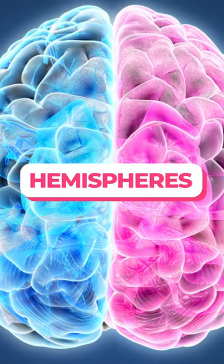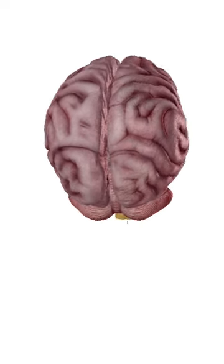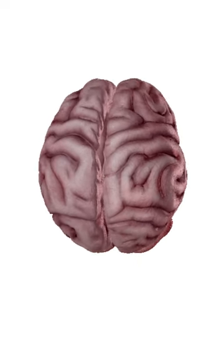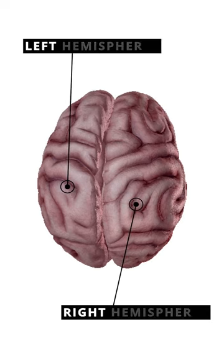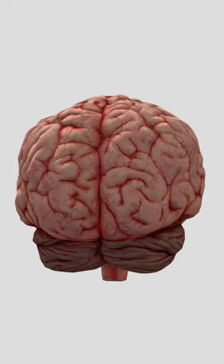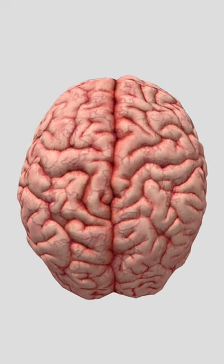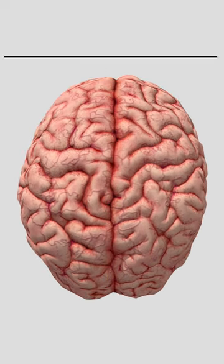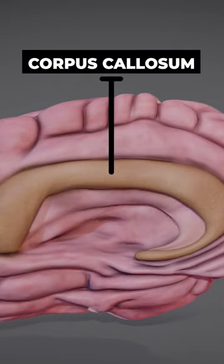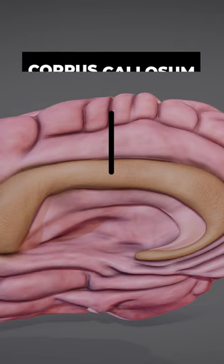Hemispheres. The cerebrum is divided into two symmetrical halves, known as the left and right hemispheres. These two halves are separated by a deep groove called the longitudinal fissure, but are connected by a thick band of nerve fibers known as the corpus callosum.